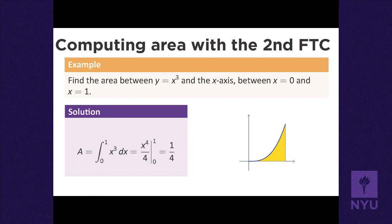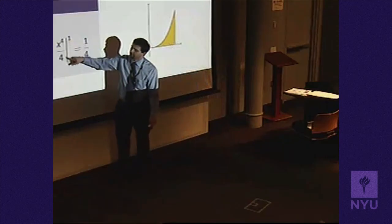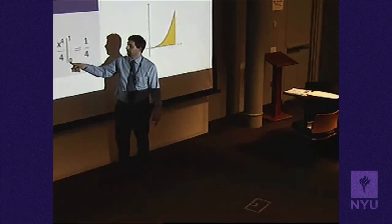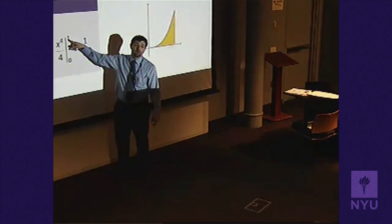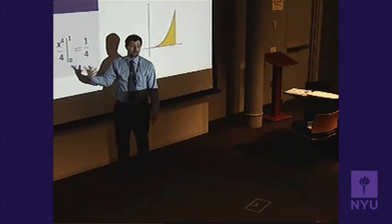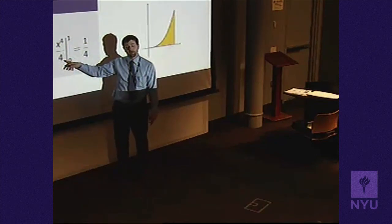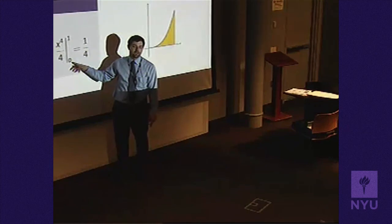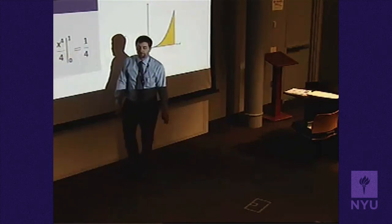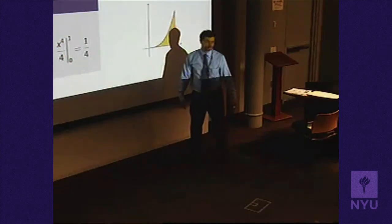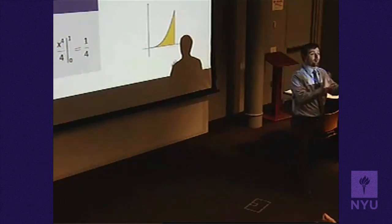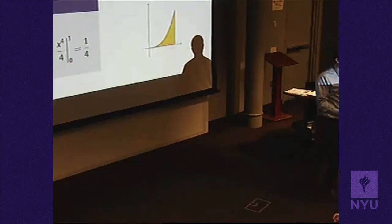The antiderivative of x³ is x⁴/4 — add 1 to the power, divide by the power. The Second Fundamental Theorem says evaluate that antiderivative between 1 and 0 and subtract. Plug in x = 1: get 1/4. Plug in x = 0: get 0. The difference is 1/4. Far easier than taking a limit of Riemann sums.